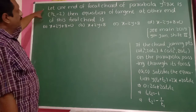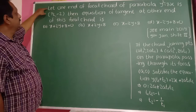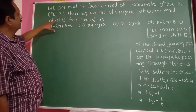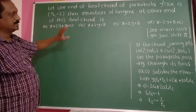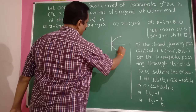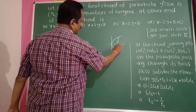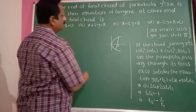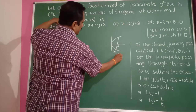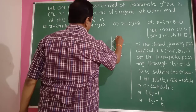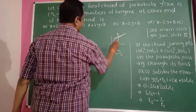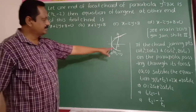Next problem: one end of a focal chord of the parabola y² = 8x is at (1/2, −2). Find the equation of the tangent at the other end of this focal chord. The parabola has a focal chord passing through the focus. One end A is at (1/2, −2) and we need the tangent at the other end B.